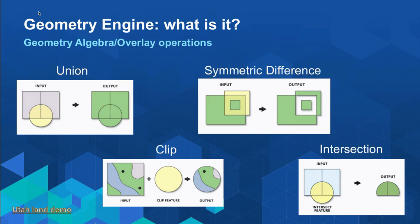Then there are overlay operations — sometimes called geometry algebra. You can take two polygons and union them together to make a bigger polygon. You can take the symmetric difference, returning polygon areas where they do not intersect. There's clip, which acts like a cookie cutter — keep Geometry A but only what is within Geometry B. And there's intersect as well, which acts similarly, but if you have a multi-part polygon, you get those parts back.